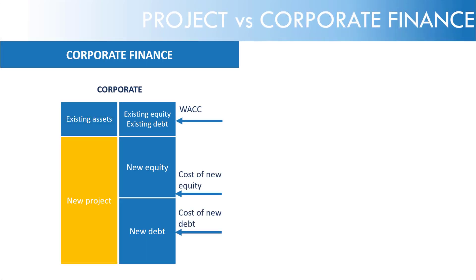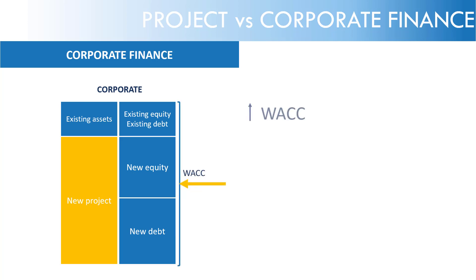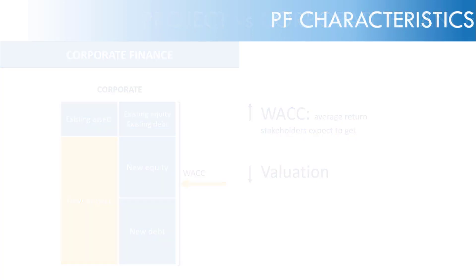And if the new project is more risky than the existing assets, this means that the cost of debt and cost of equity would likely go up, and therefore the combined WACC — weighted average cost of capital, the average return that stakeholders expect — would likely go up, meaning the existing company has a lower valuation. With that in mind, let's go through the Project Finance characteristics.